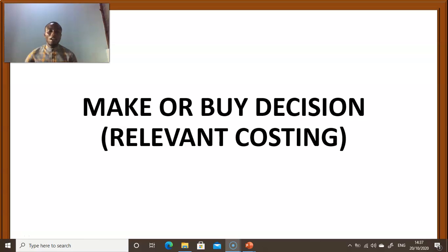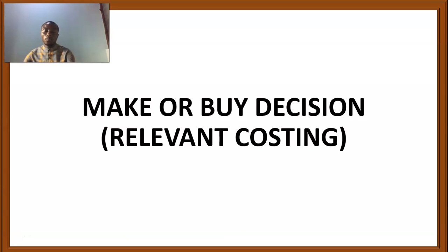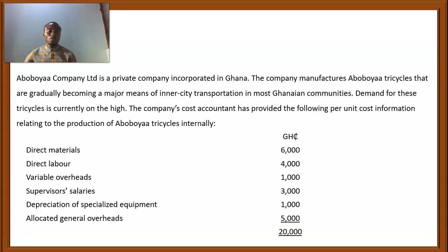In this video, I'm going to demonstrate how a make-or-buy decision is arrived at under relevant cost. Let's go through this question. Abubo Yar Company Limited is a private company incorporated in Ghana. The company manufactures Abubo Yar tricycles that are gradually becoming a major means of inner-city transportation in most Ghanaian communities. Demand for these tricycles is currently high. The company's cost accountant has provided the following per-unit cost information relating to the production of Abubo Yar tricycles internally.